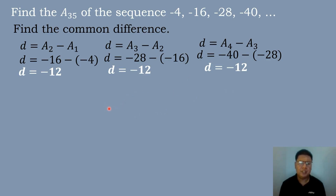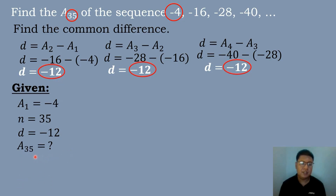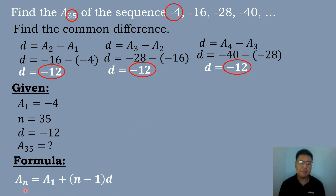After finding the common difference, we identify the given. The first term a sub 1 is equal to negative 4, the value of n is equal to 35, and the value of the common difference is equal to negative 12. We will find the value of the 35th term, a sub 35. We use the formula: a sub n equals a sub 1 plus the quantity n minus 1 times the common difference.